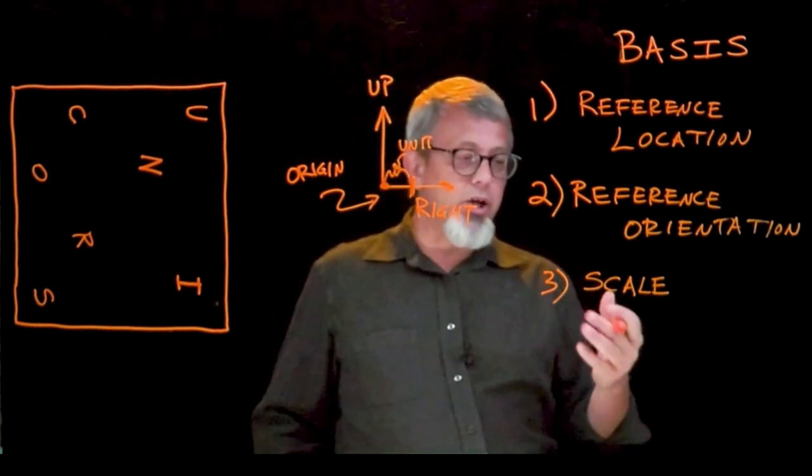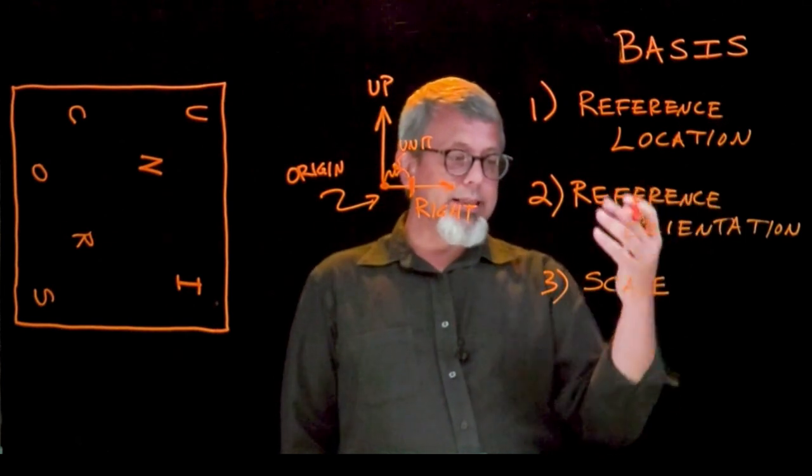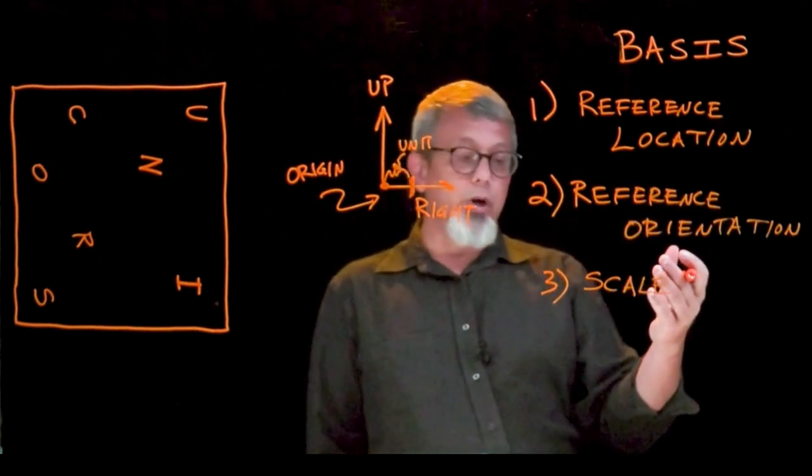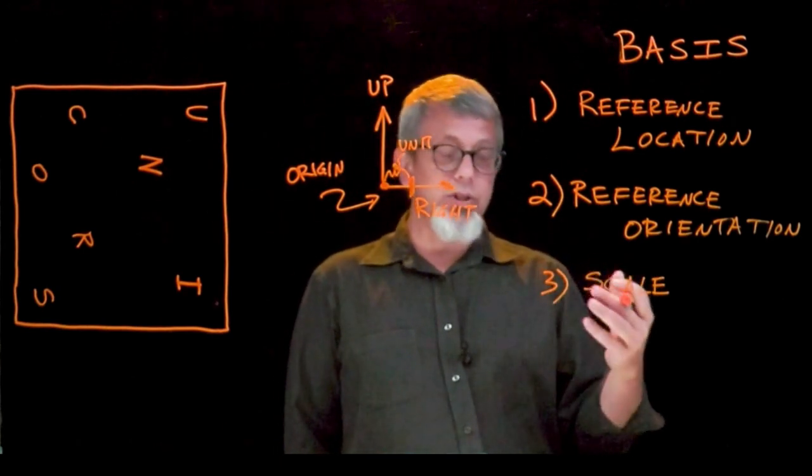The combination of these three elements, the location, the orientation, and the scale, will then allow for a quantitative description, one that uses numbers, for identifying locations in space.